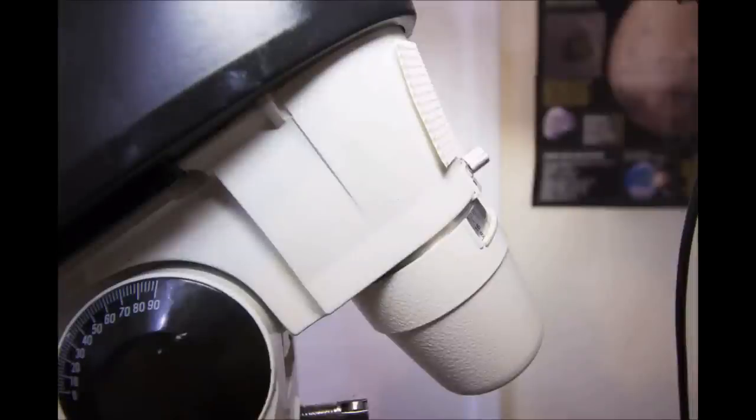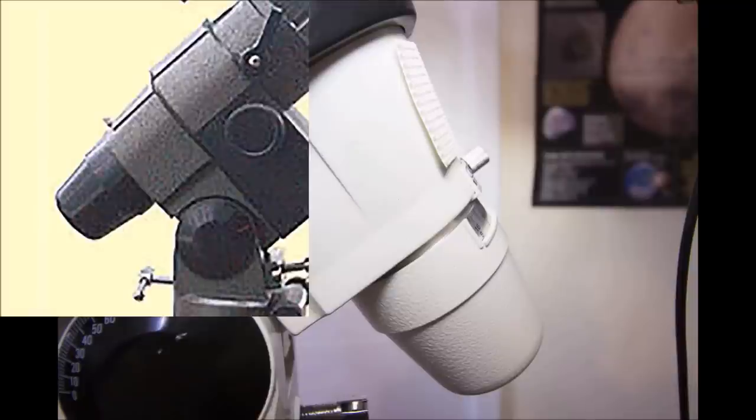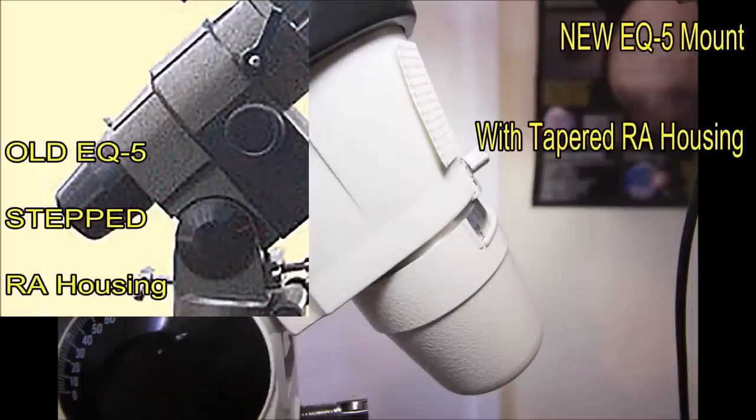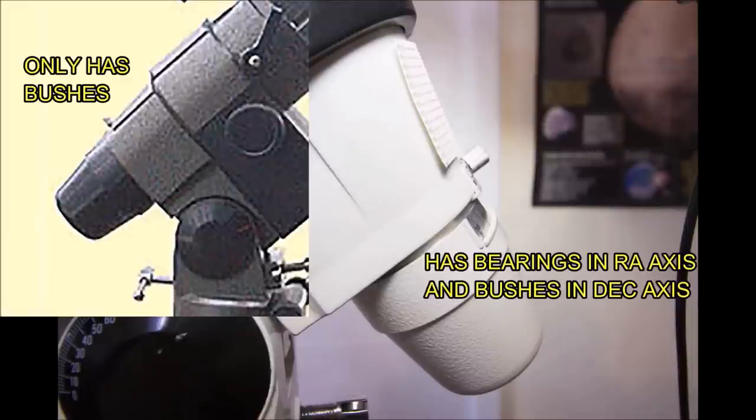Please note, on the current Skywatcher EQ5 mount, if you look at the tapered RA housing of your mount, if it's tapered, this will contain the thrust bearing and the deep groove bearing in the RA housing. However, if you own the old Skywatcher EQ5 mount, you need to look at the RA housing itself and take note. If it's stepped with like a little ridge on the RA housing, that indicates that there's no bearings in that model. So please be aware, take a look at the RA housing first before you order the bearings.